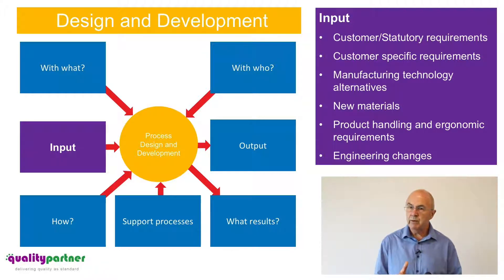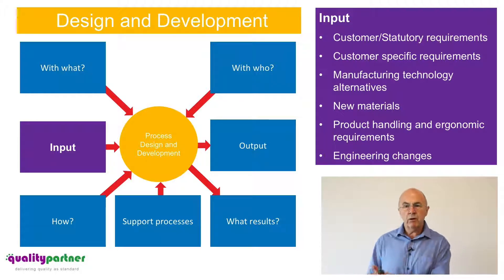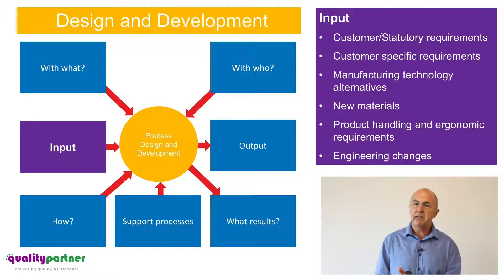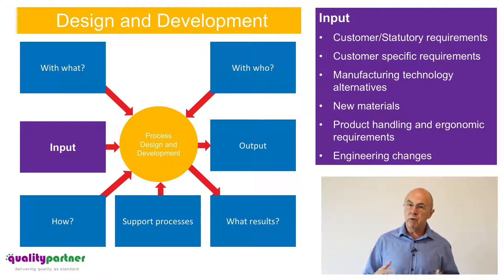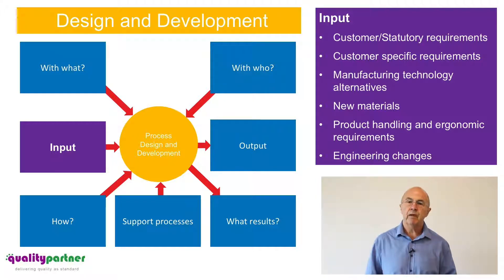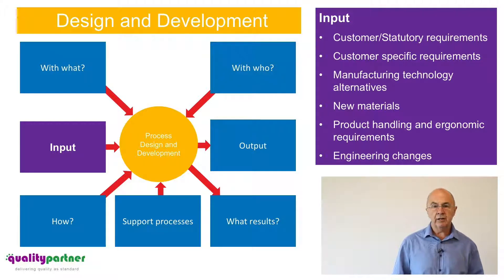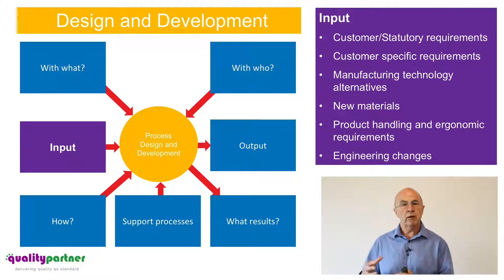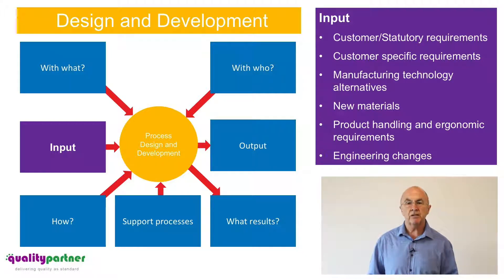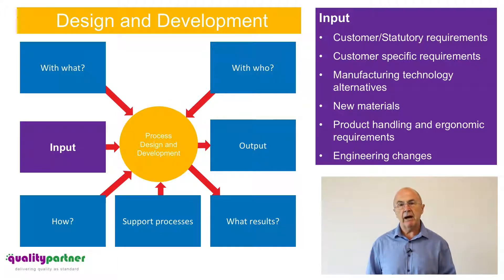When designing a manufacturing process, we need to think about how we're going to adequately handle the product through the process. We also need to think about the human element — the ergonomic requirements so that people working within the process can operate comfortably and safely. We also need to consider engineering changes: there may be changes that come from the customer, and within the process design and development we need to think about how we're managing those engineering changes.